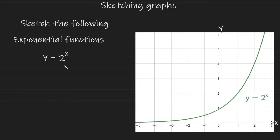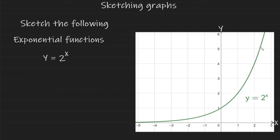Now let's look at sketching exponential functions. An exponential function is where you have a base value to the power of a variable — in this case, 2 to the power of x. The key characteristics are: it comes from the negative x-axis and never touches it, it always intersects the y-axis at 1, and then it keeps getting steeper and steeper going up.